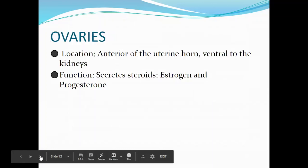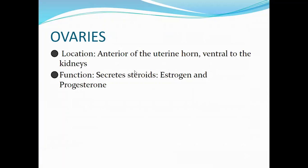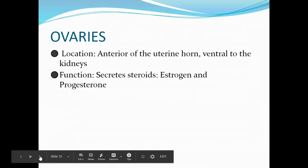The ovaries are usually located anterior to the uterine horn — or more precisely, cranial to the horn — and ventral, or caudal, to the kidneys. The function of the ovaries is to secrete steroids and estrogen, and they are also the source of the ovum or oocyte that is released.